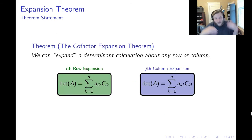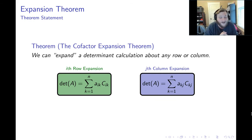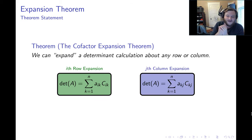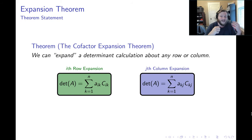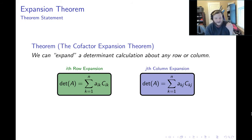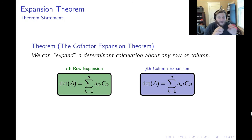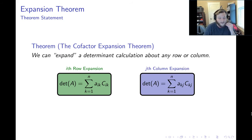Why are cofactors so useful? Other than cleaning up the determinant formula, the combinatorics of these formulas reveals that the rule of expanding down the first column — plucking out entries and multiplying by cofactors — can actually be done with any row or any column, not just the first column. This is what we call the expansion theorem.